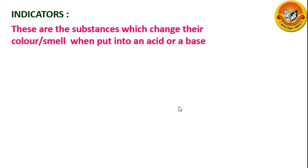These are the substances which change their color or smell when put into an acid or base. Thus, an indicator tells us whether the substance we are testing is an acid or base by change in its color or smell.